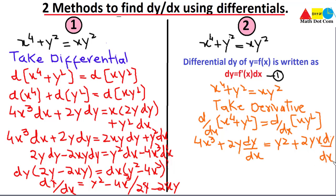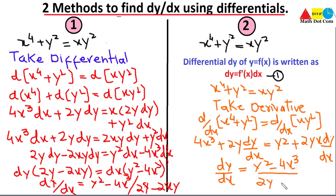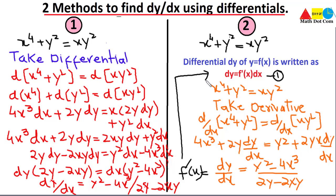Combining the dy/dx terms on one side and simplifying, we get dy/dx = (y² − 4x³) / (2y − 2xy), which is f′(x). This is Method 2 for finding dy/dx using differentials. You can also use these methods to find only dy or only dx as differentials. That's all from today's lecture. Thank you.